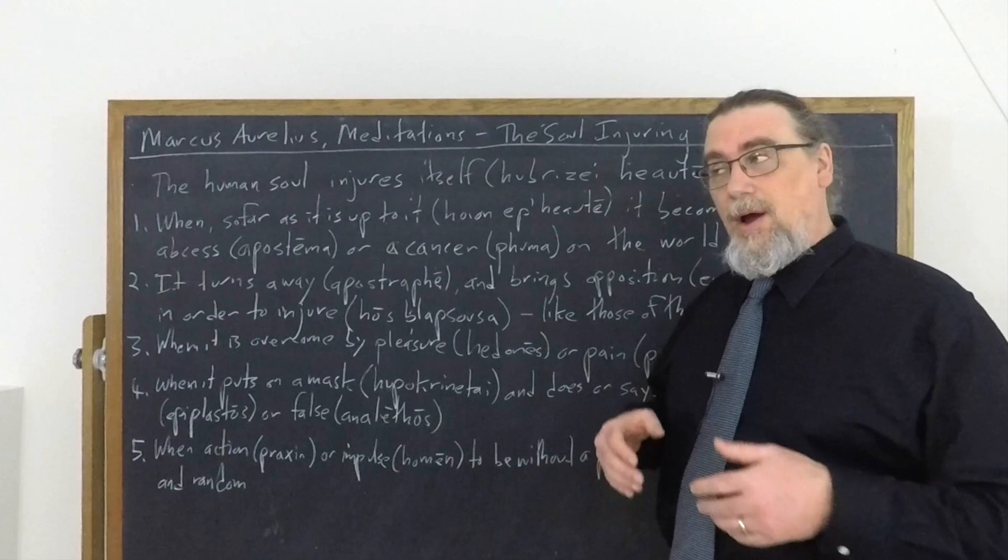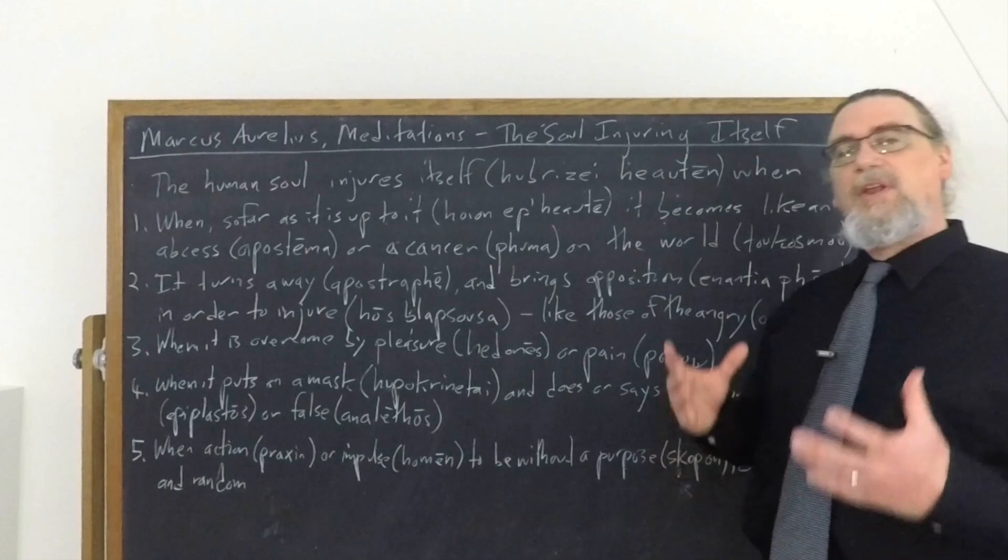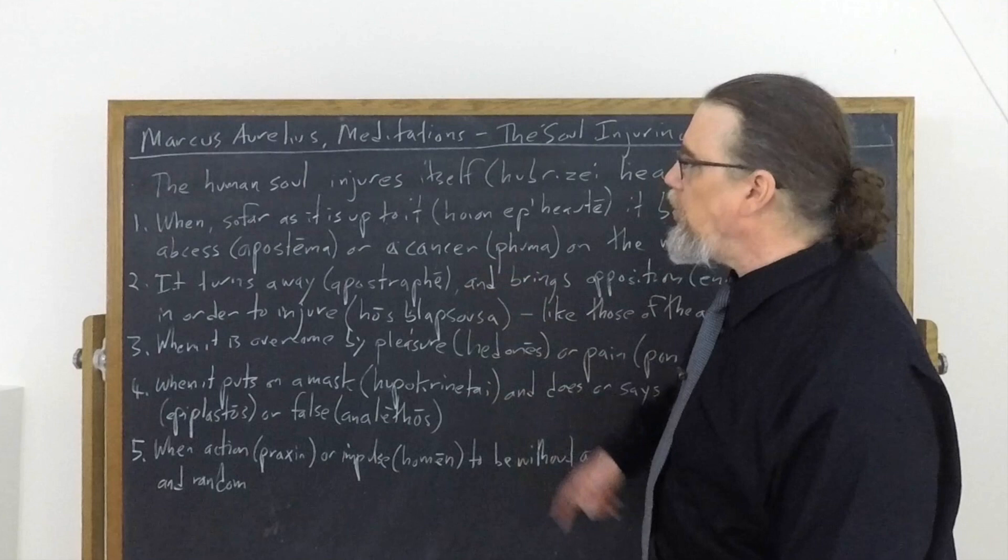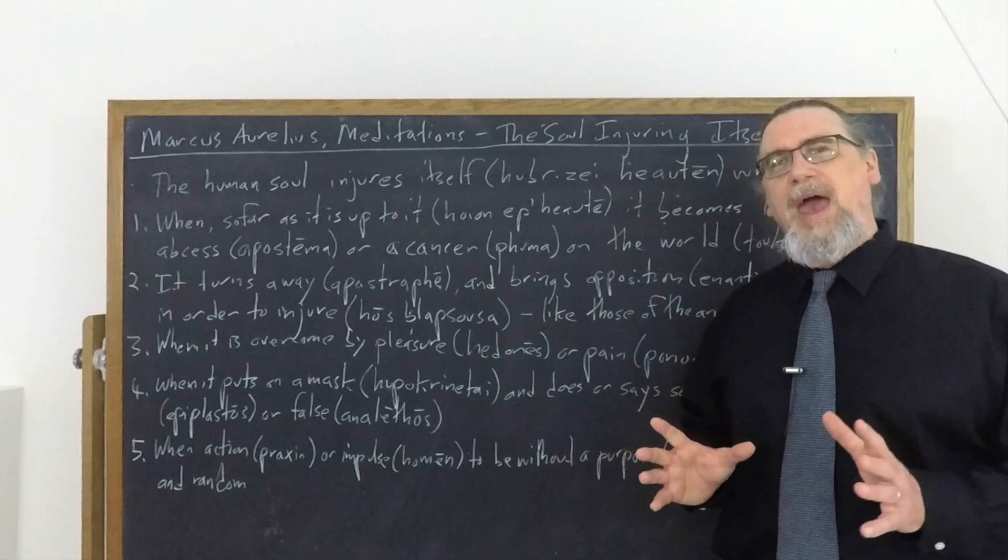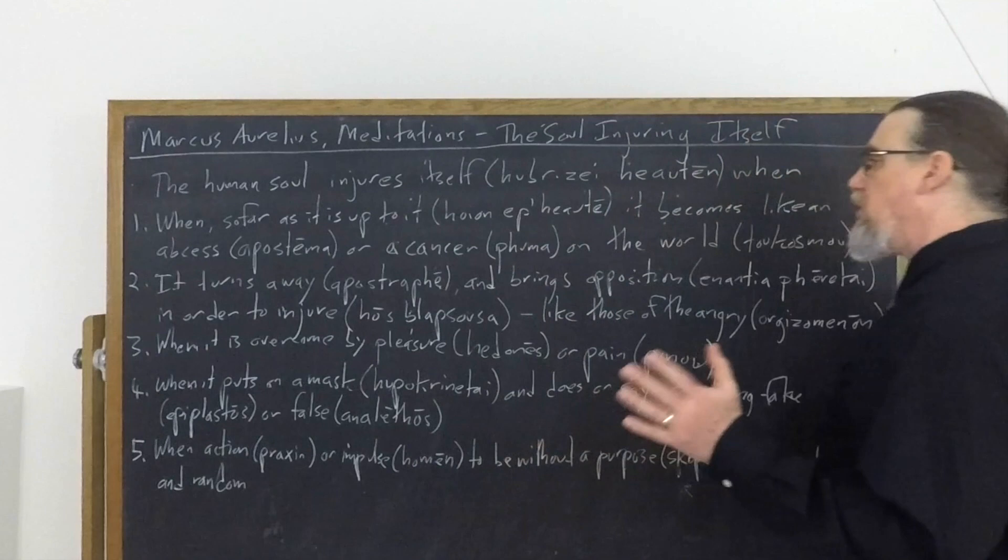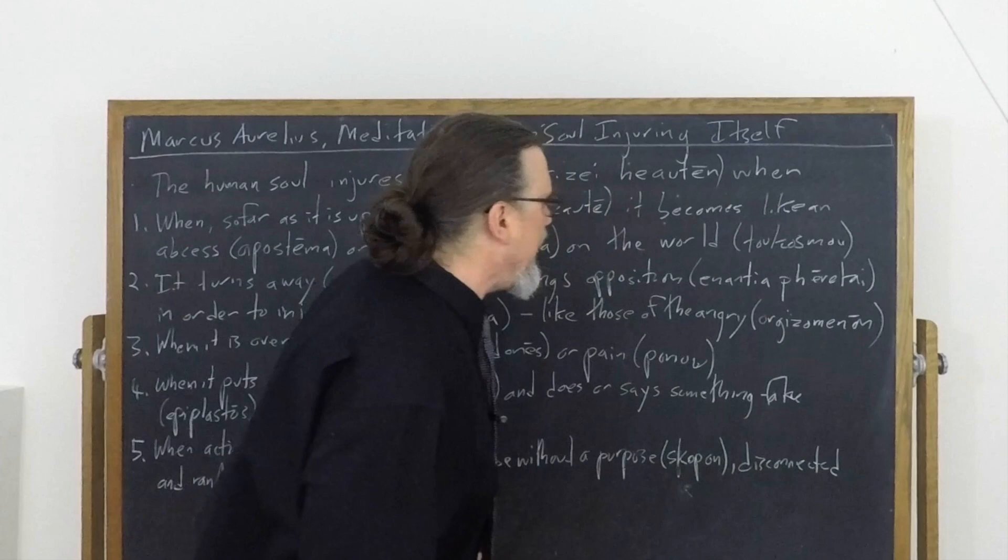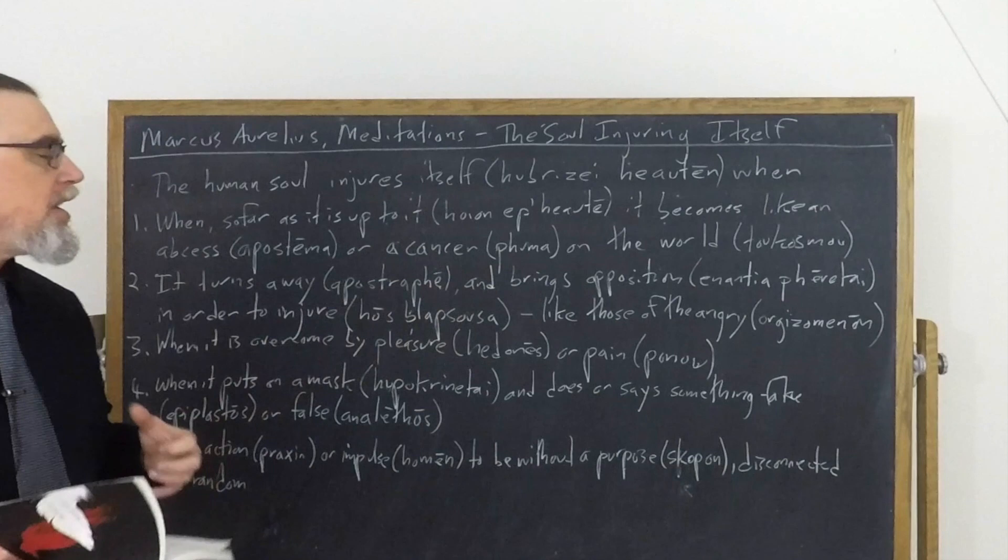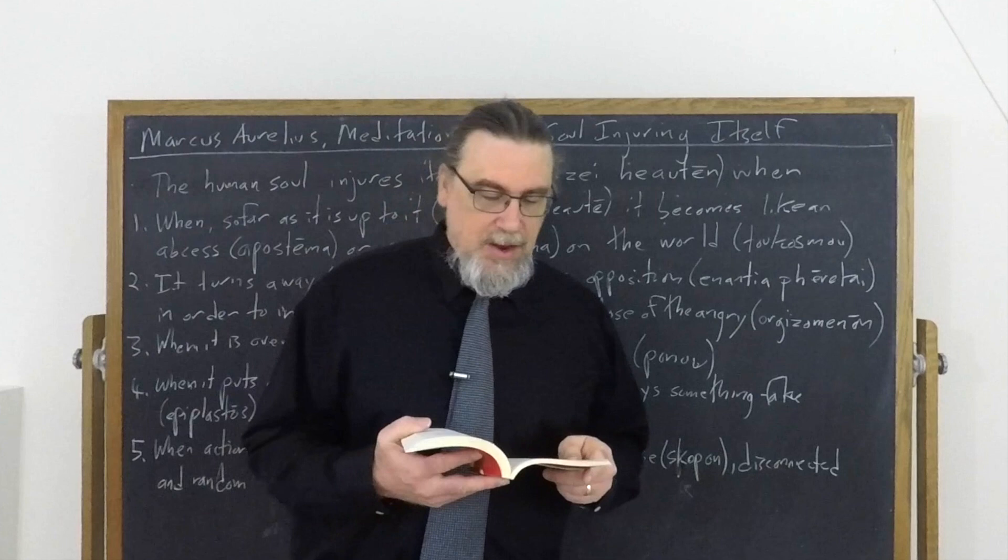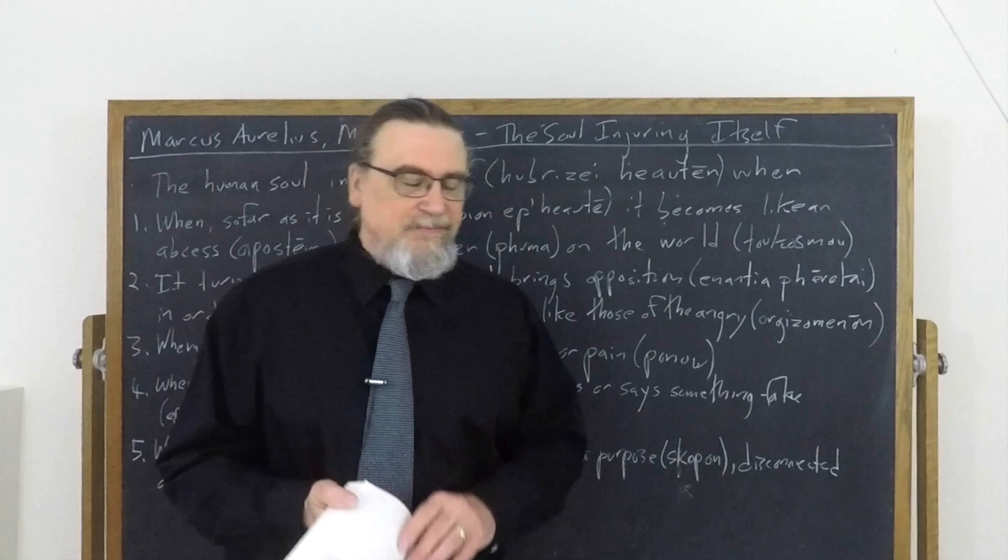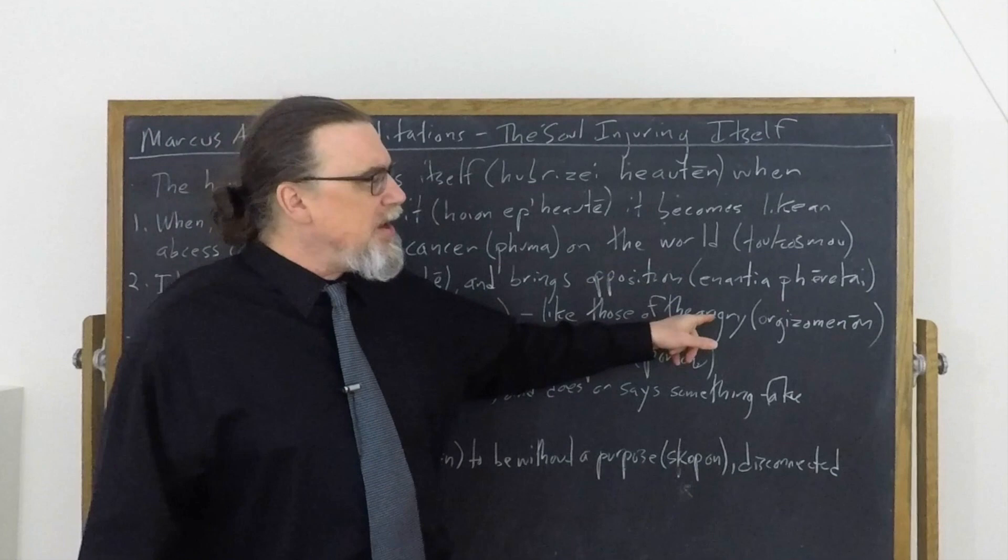The second one, he says, when it turns away, apostrophe. It turns its back as one translation, but it could just be it distances itself from, from who? From other people and brings opposition. It brings things that are opposed that might be noxious in order to injure. So it's trying to injure other people, not itself. Sets out to do harm is another way of translating this. And then Marcus says, like the souls of the angry people, those who are in the process of being and expressing their anger.